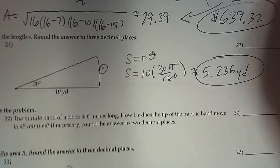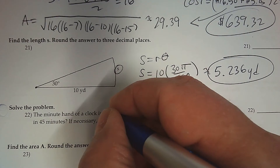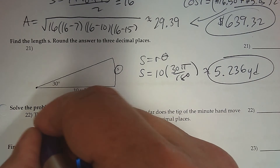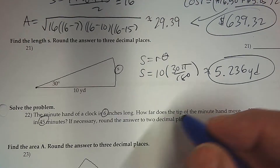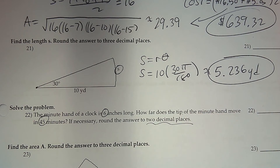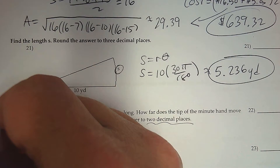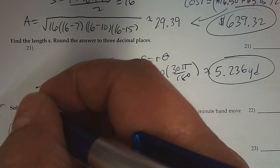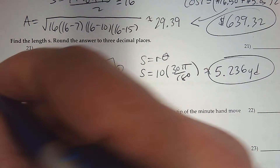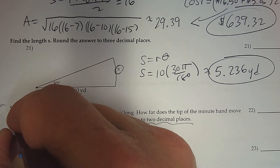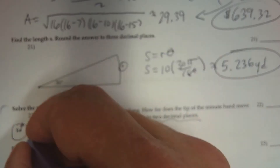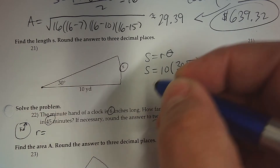Number 22. The minute hand of a clock is 6 inches long. How far does the tip of the minute hand move in 45 minutes? Round to two decimal places if necessary. If you think of the clock and the minute hand as a circle, the length of the minute hand is the radius. So in this case, the radius is 6 inches.